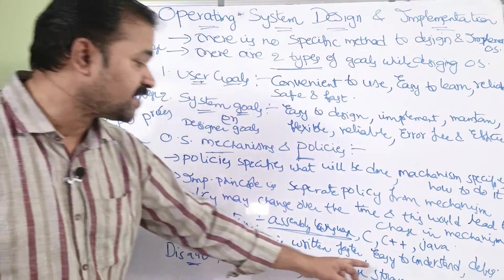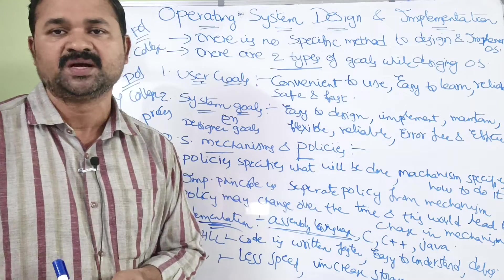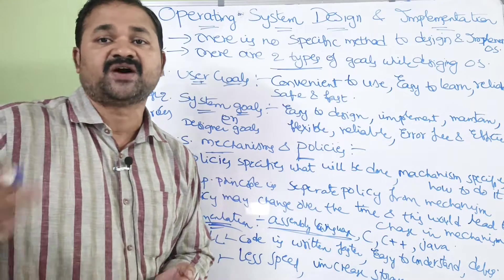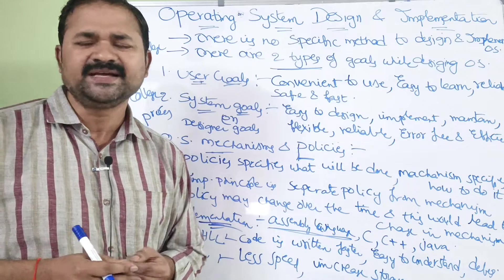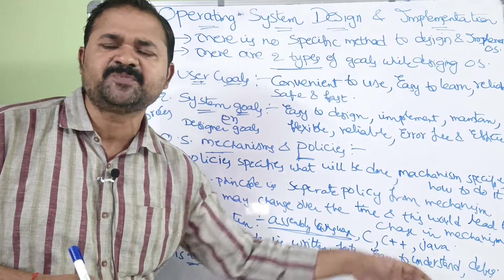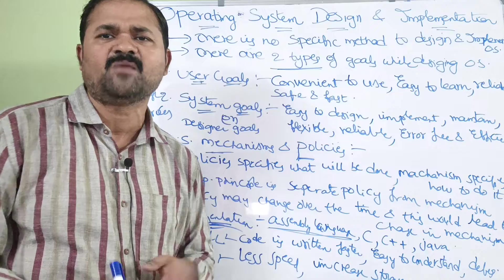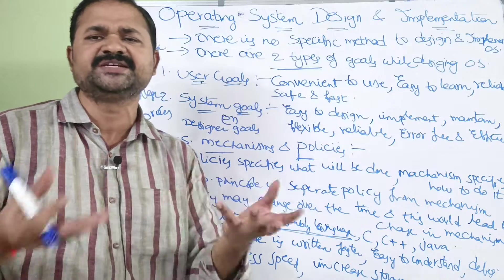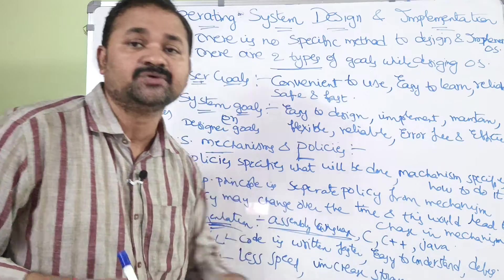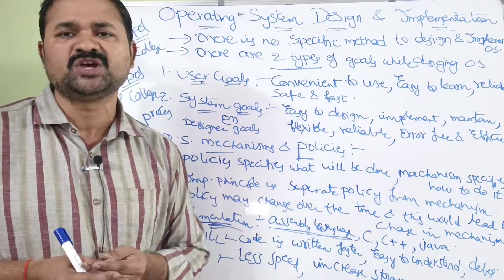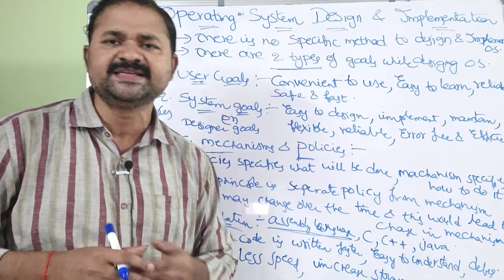Another advantage is that it is easy to understand the program. If another person sees our program, they can understand it very easily because it is in the form of alphabets, digits, and symbols. It is also very easy to debug — if there are any errors, we can correct them very easily and check whether it is producing correct results or not.